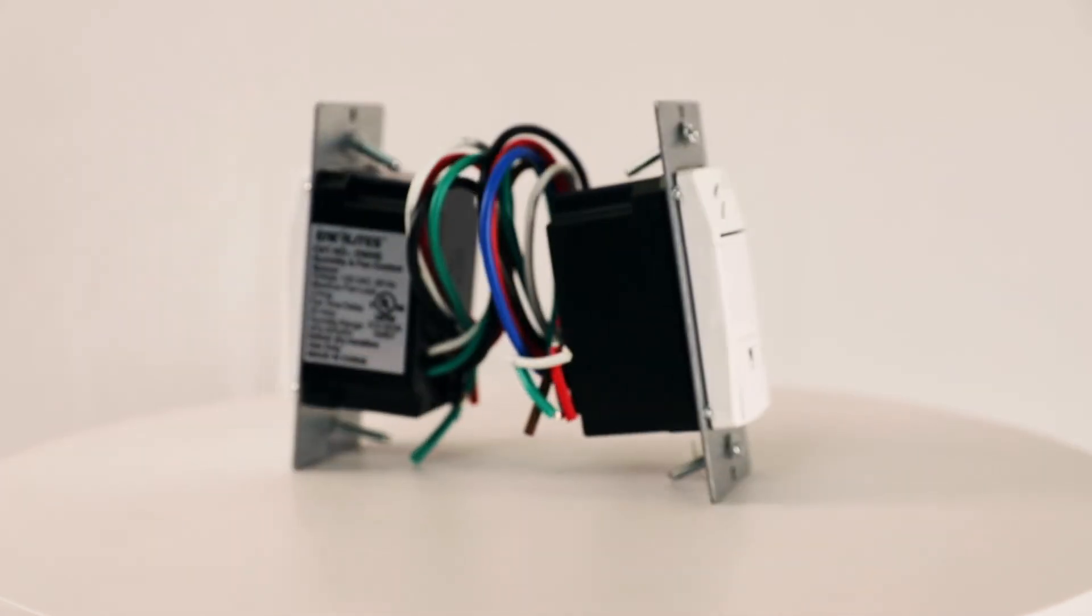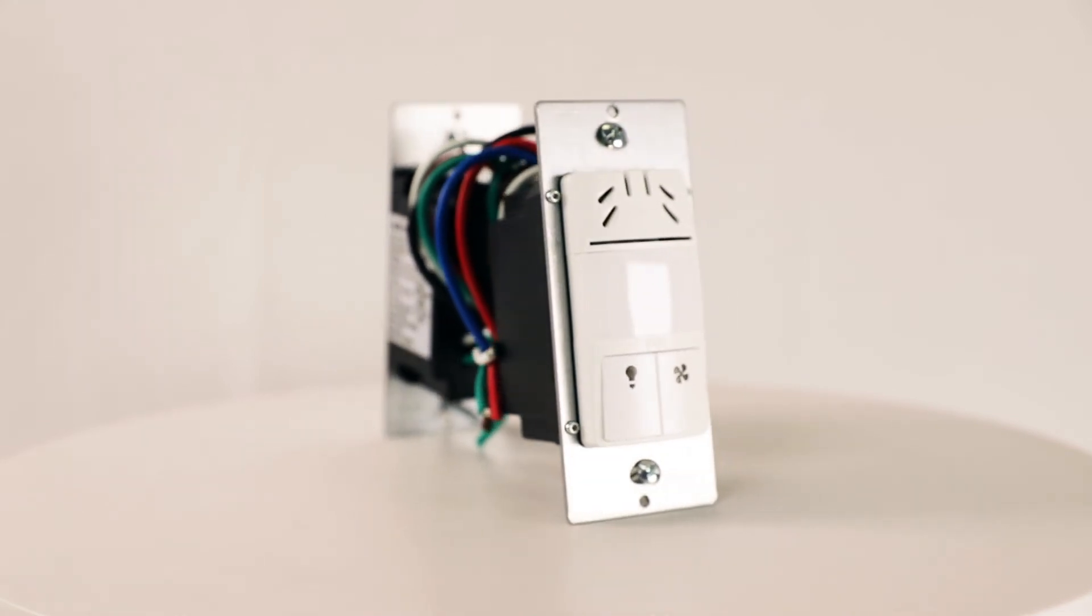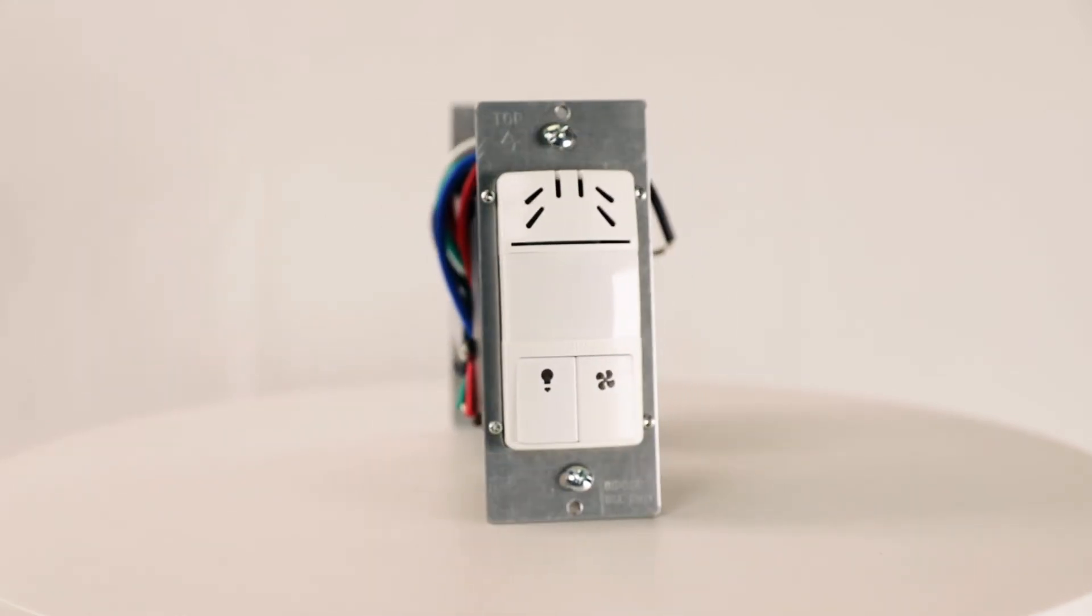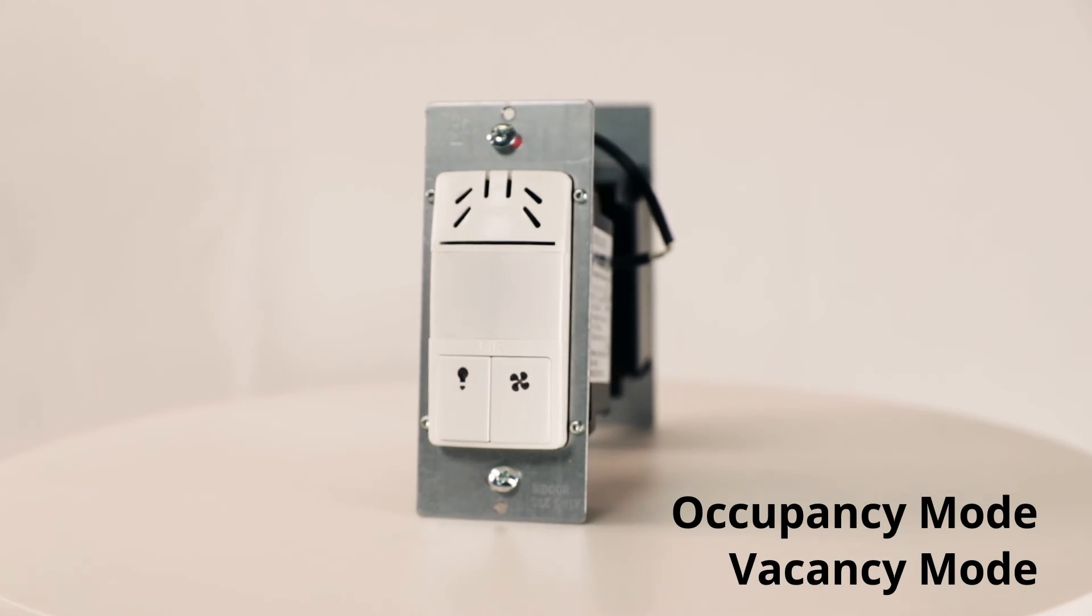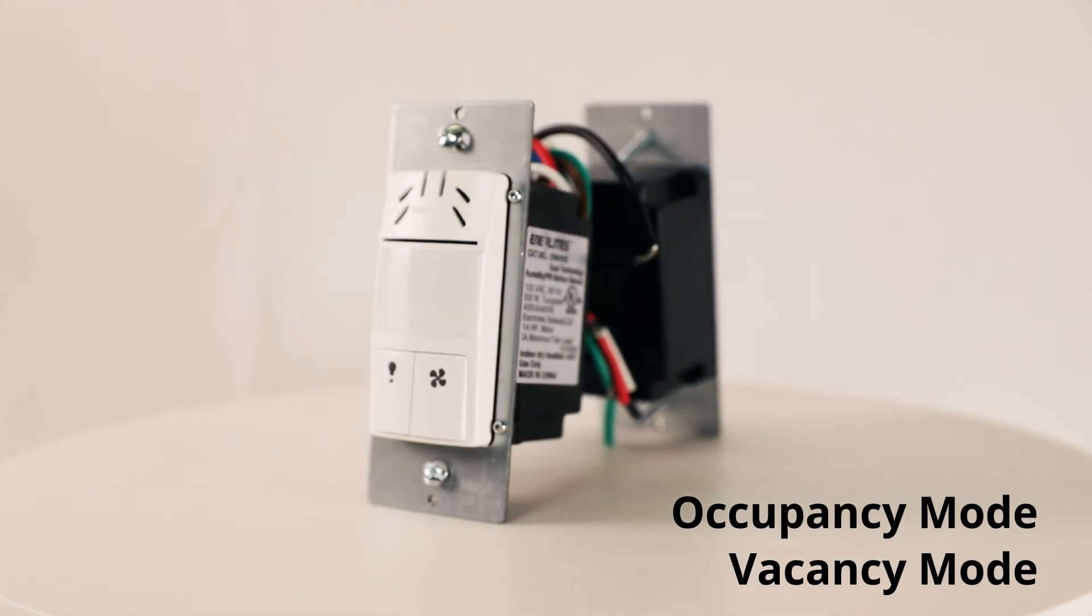The dual load fan and light PIR switch enables users to adjust their mode preference to operate lights on-off based on occupancy or vacancy in the area.